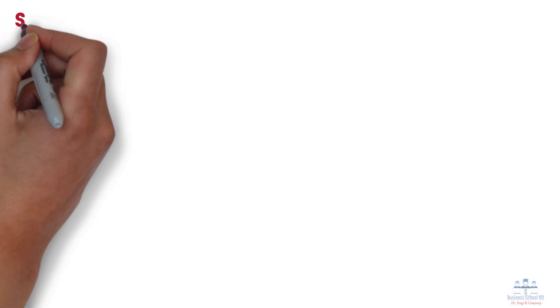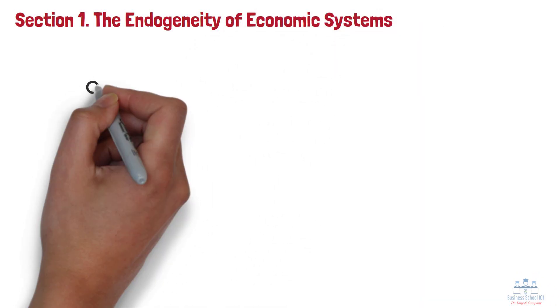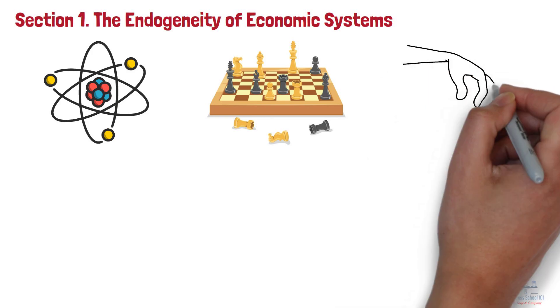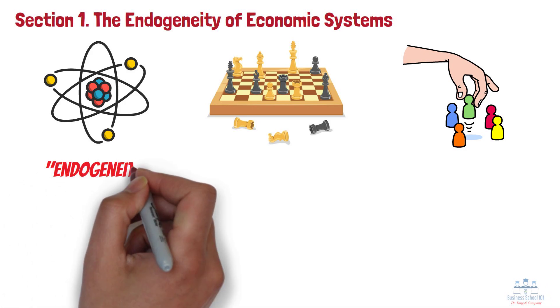Section 1: The Endogeneity of Economic Systems. What defines the economic system's characteristics? Imagine playing a chess game with a unique twist—every time you contemplate your next move, all the pieces on the board quietly shift positions because they are also adjusting themselves based on your thinking. This is the endogeneity of the economic system.